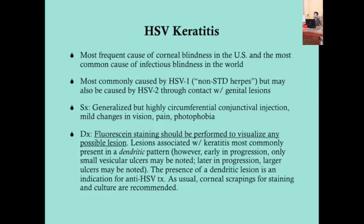Diagnosis uses fluorescein staining. The hallmark of HSV keratitis — and a likely board question — is the dendritic pattern of the ulcers. The word dendritic comes from the Greek 'dendros' meaning tree, as the lesions look like nerve cells or branching trees. Very early on you may see small vesicular ulcers; later, larger plaque-like ulcers similar to bacterial keratitis. But the most common presentation is the dendritic stage.